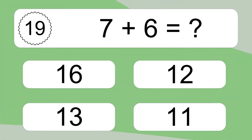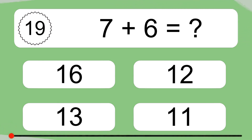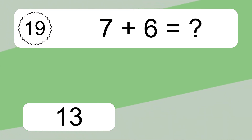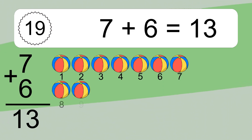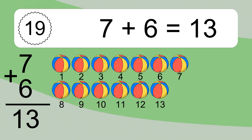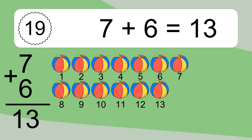7 plus 6 equals what? 7 plus 6 equals 13. Let's count it: 1, 2, 3, 4, 5, 6, 7, 8, 9, 10, 11, 12, 13.